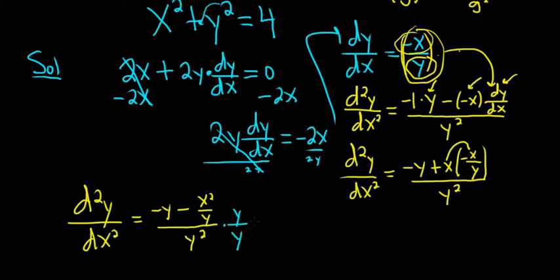We distribute the y into the numerator. y times negative y is negative y squared, and then y times this, well, the y's cancel, so you just get negative x squared. On the bottom we get y times y, so that's y cubed.